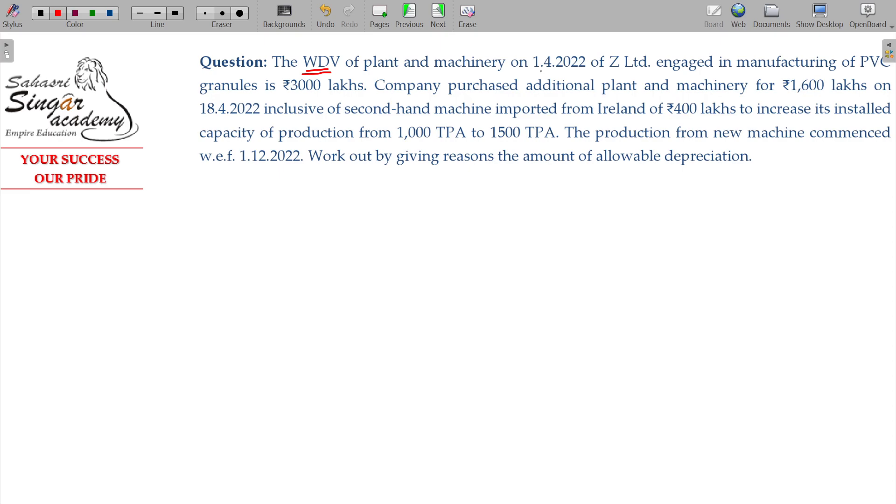The WDV of plant and machinery on 1-4-22 of Z Limited engaged in manufacturing PVC granules. Their opening WDV being 3000 lakhs. So plant and machinery, rate of depreciation, opening WDV of the block being 3000 lakhs. Company purchased additional plant and machinery for 1600 lakhs.